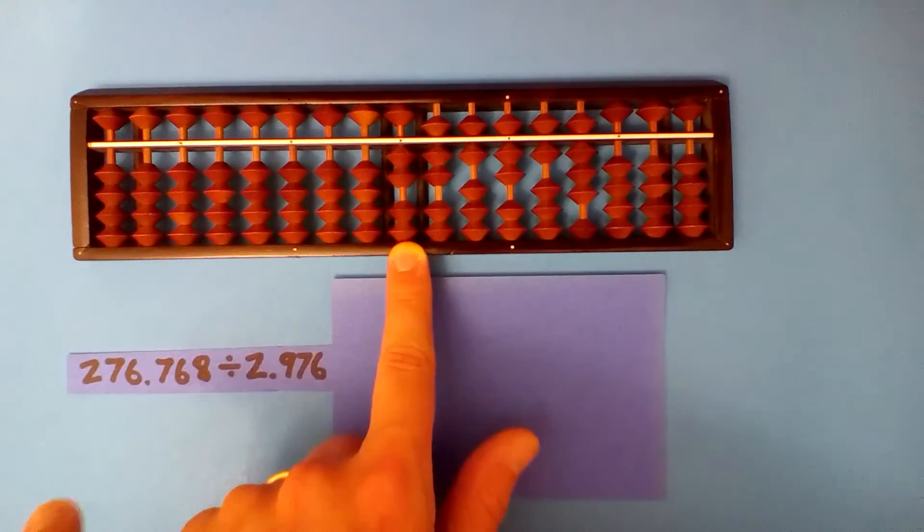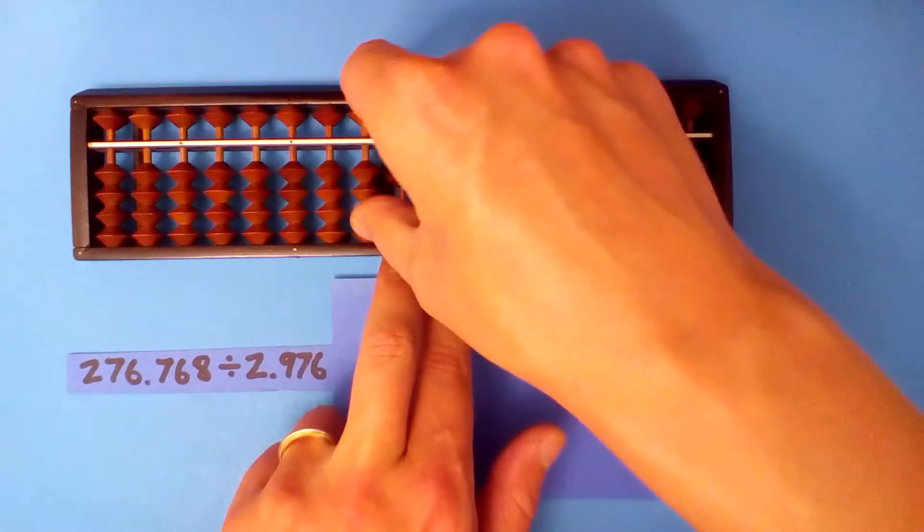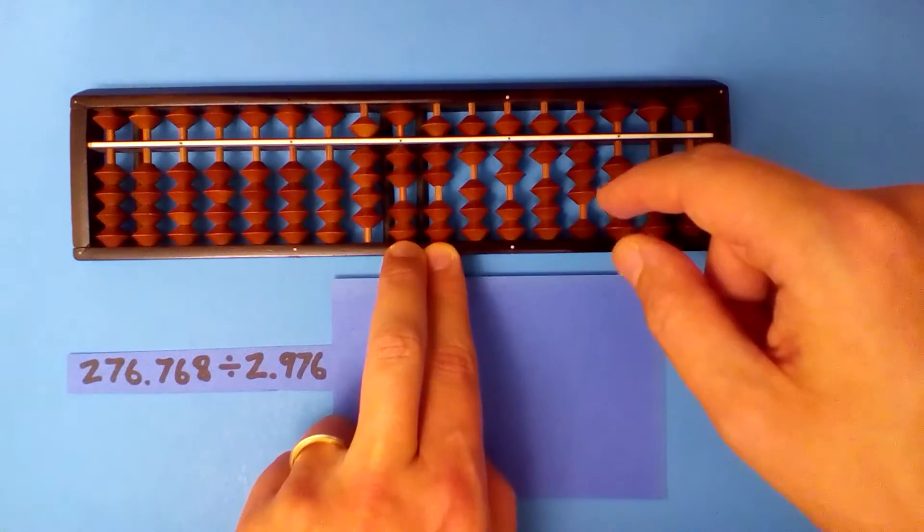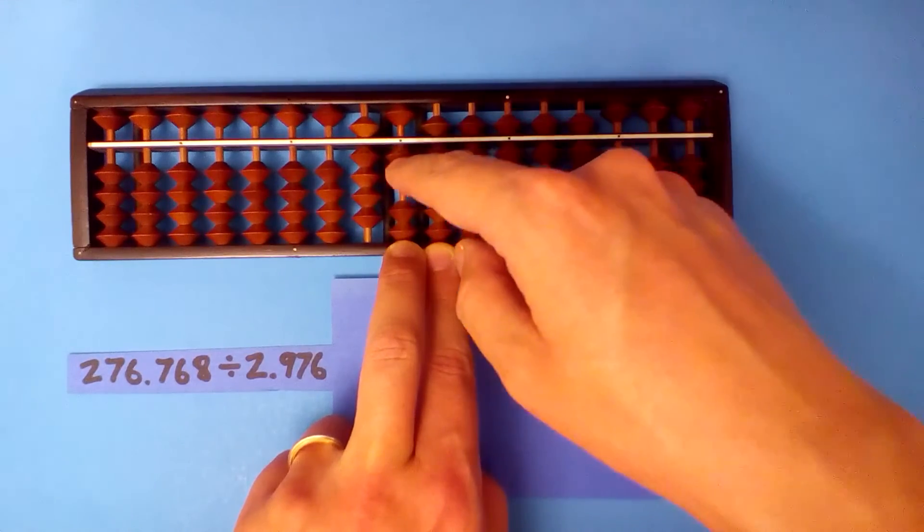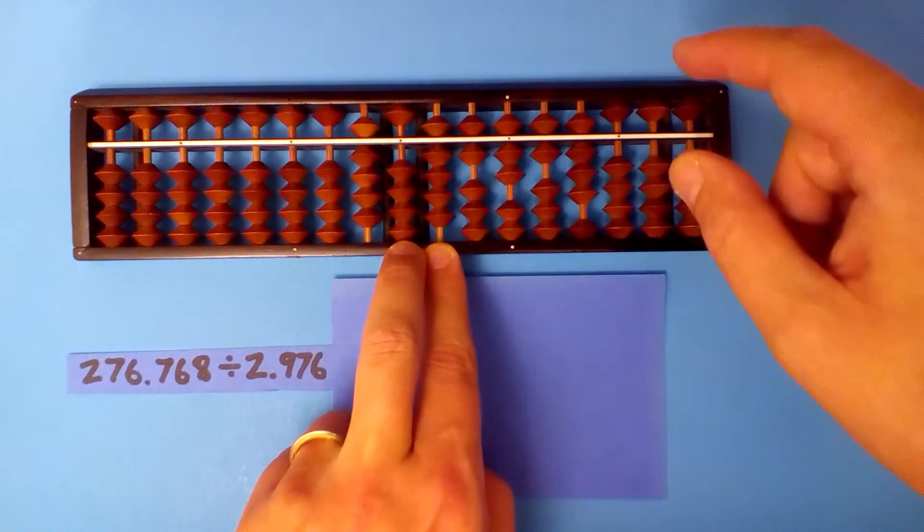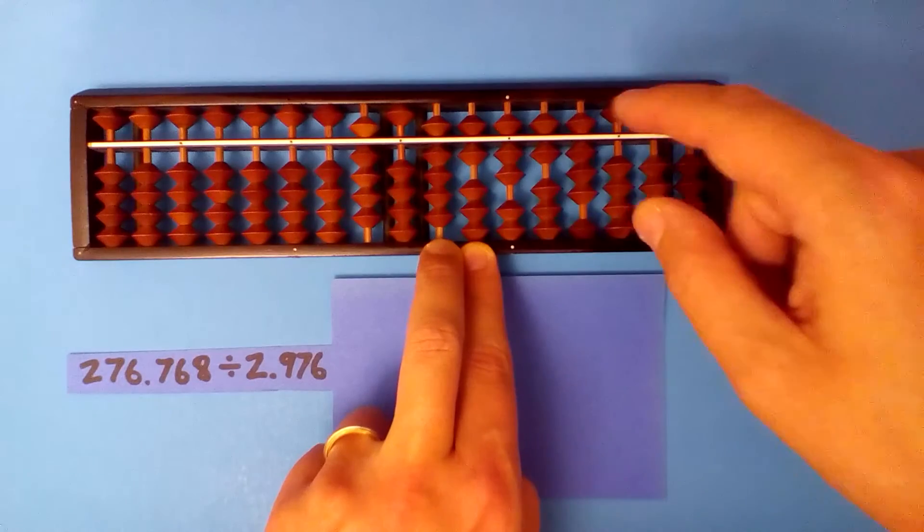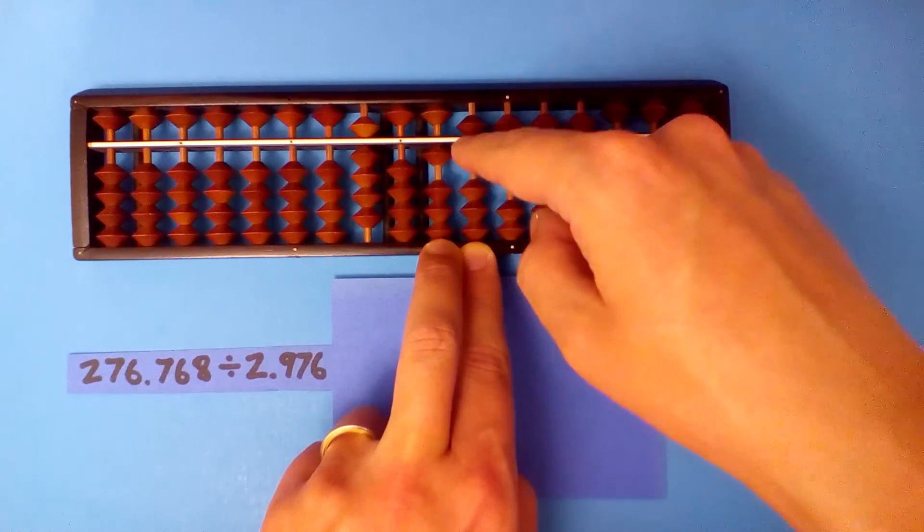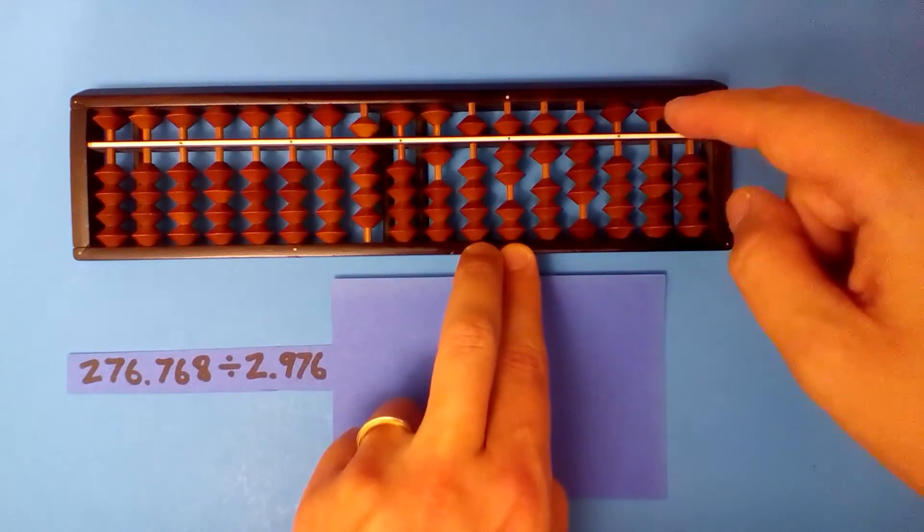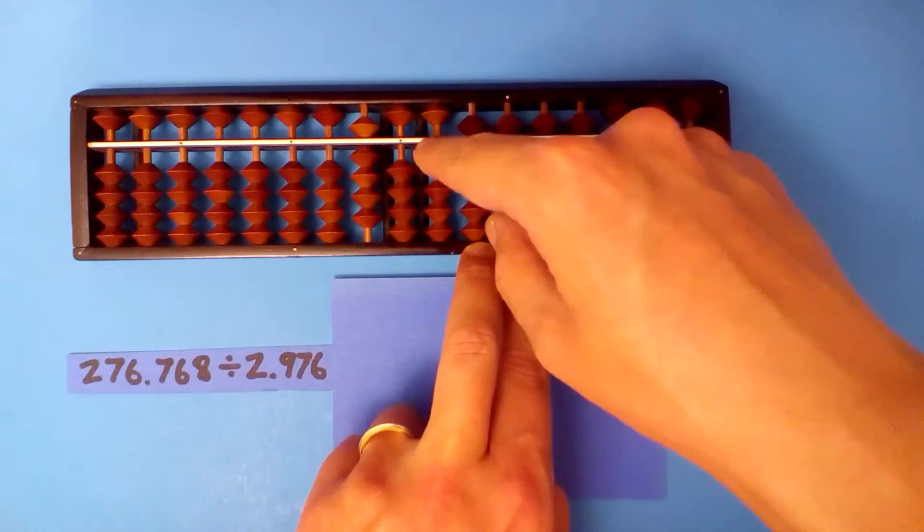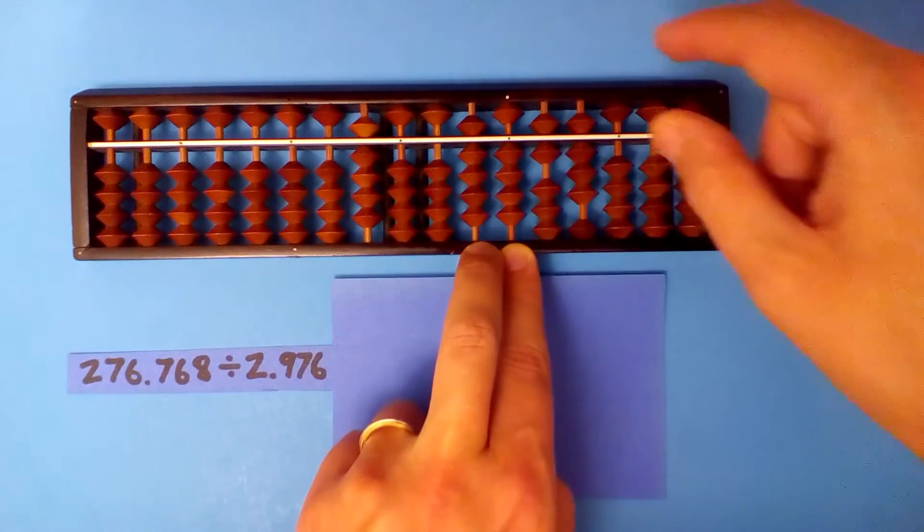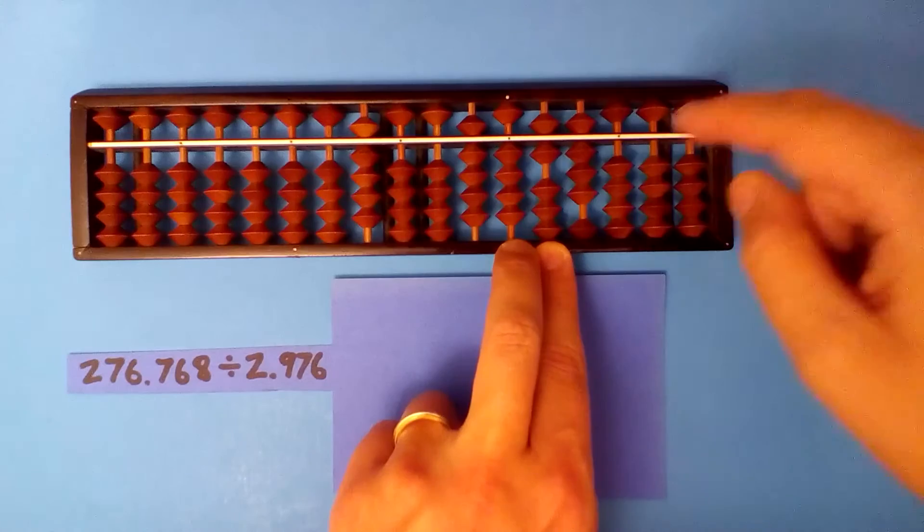2.9 into 27 nine times. Nine times two eighteen, nine times nine eighty-one, nine times seven sixty-three, nine times six fifty-four.